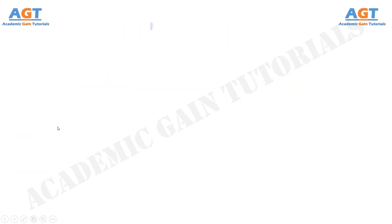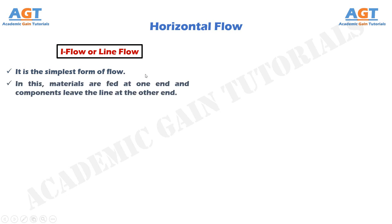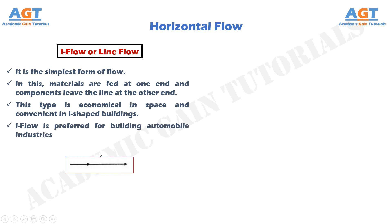Number 1: I flow, or line flow, which is also known as straight line flow. It is the simplest form of flow. In this, materials are fed at one end and components leave the line at the other end. This type is economical in space and convenient in I-shaped buildings. I flow is preferred for building automobile industries. This figure demonstrates I flow, or line flow, which is also known as straight line flow pattern of materials.